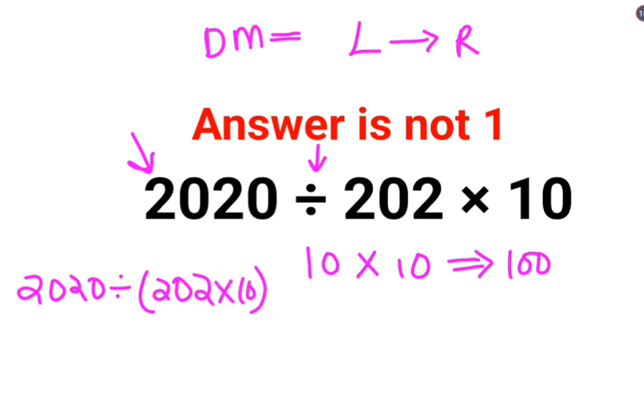That means according to BODMAS and PEMDAS bracket has been given higher precedence. So then that becomes 2020 divided by 2020. So the answer comes out to be 1.